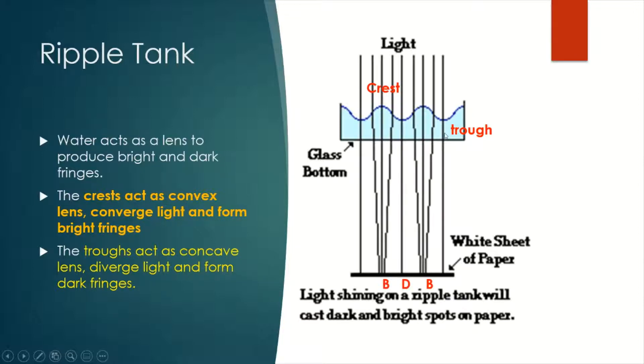But at the trough region, light diverges. It spreads out and therefore a dark fringe is formed. That's why we see bright and dark fringes on the paper.